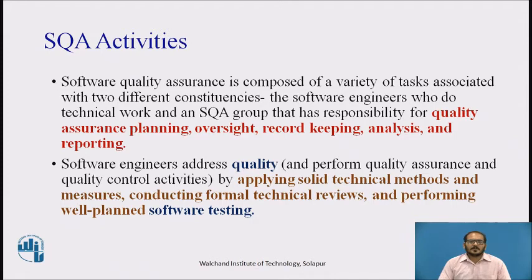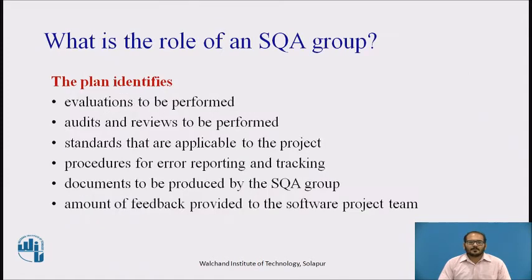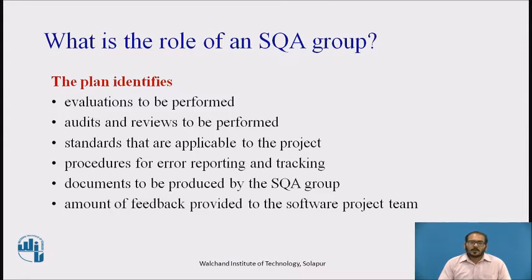These activities are performed by an independent software quality assurance group. The SQA group prepares an SQA plan for a project, developed during project planning and reviewed by all interested parties. Quality assurance activities performed by both the software engineering team and the SQA group are governed by this plan, which identifies evaluations to be performed, audits and reviews to be conducted, applicable standards, procedures for error reporting and tracking, documents to be produced by the SQA group, and feedback provided to the project team.